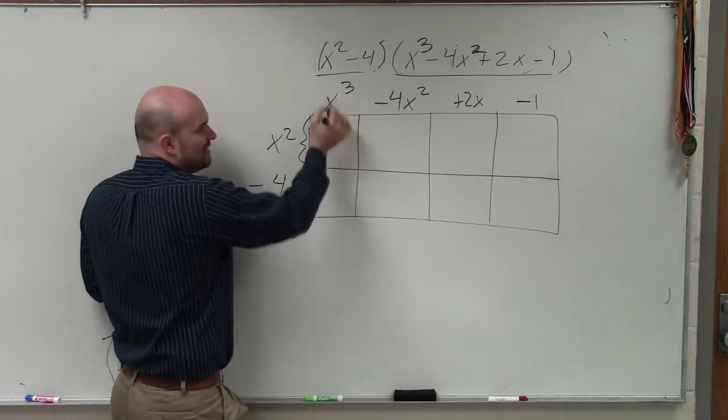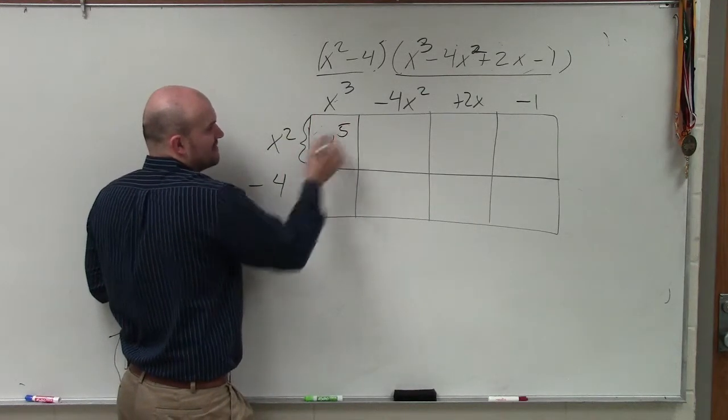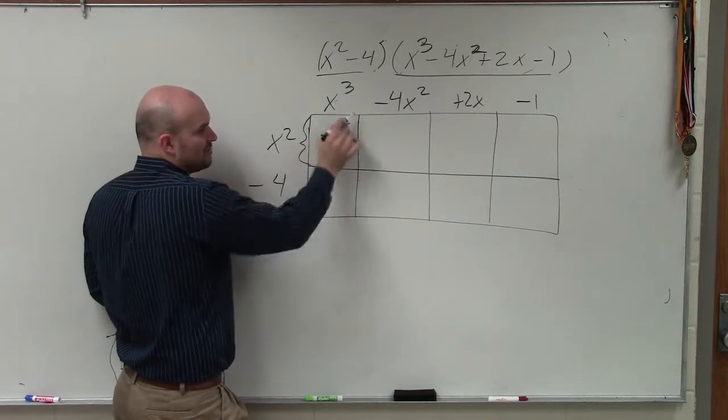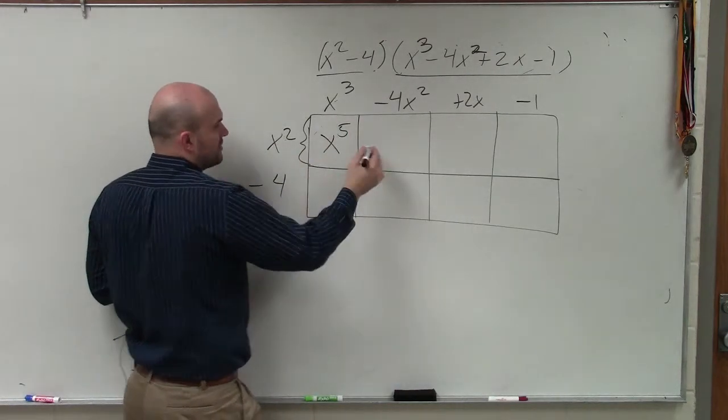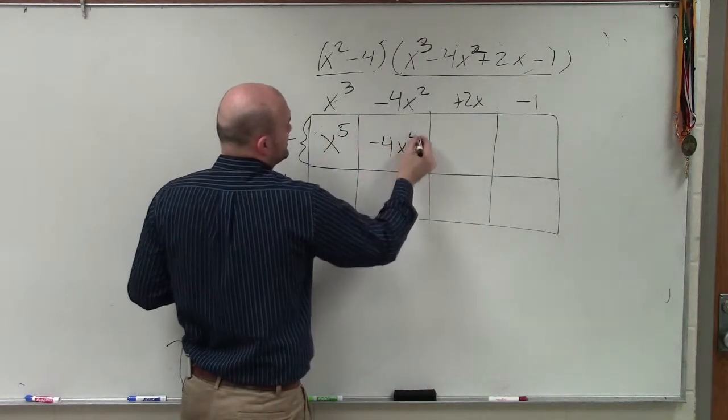and then I multiply it by this width, which is x cubed, so that's x to the fifth. Then I multiply x squared times negative 4x squared, which is a negative 4x to the fourth.